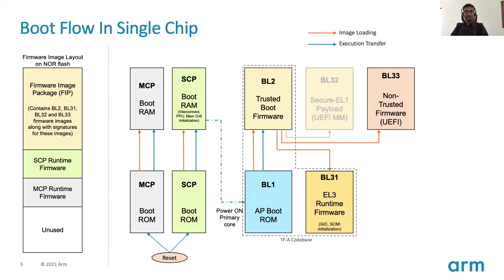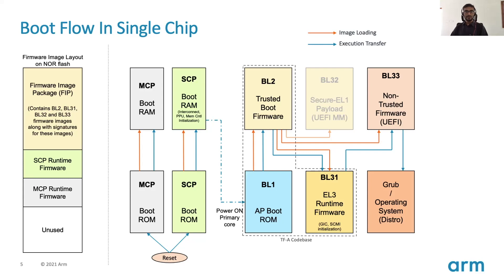Once the image load is complete, execution will get transferred to BL31, which is executing in DRAM. BL31 being the EL3 runtime firmware is responsible for setting up the GIC distributor and redistributor, and also the SCMI channel. SCMI is a system control and management interface — it's an ARM specification on how message passing between AP core and SCP core should happen in a system where application core power management is done by the SCP. Once BL31 completes its initialization, transfer of execution will happen to BL33, which will complete all its stages and load the actual operating system.